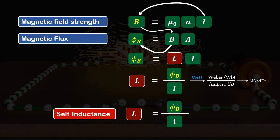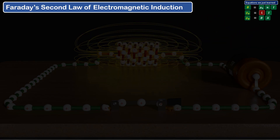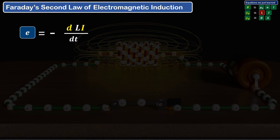Now let's understand self-inductance with more clarity. According to Faraday's second law of electromagnetic induction, the magnitude of EMF induced E is equal to the rate of change of magnetic flux, d-phi-B by dt. Now, putting the value of magnetic flux phi-B equal to L times I, which we have just derived for the inductor, and since L is constant, we take it out and get the equation: EMF induced equals minus L times di by dt, where di by dt represents the rate of change of current.